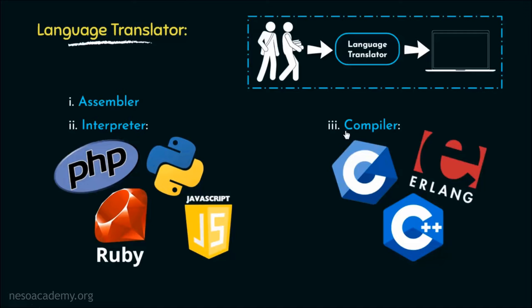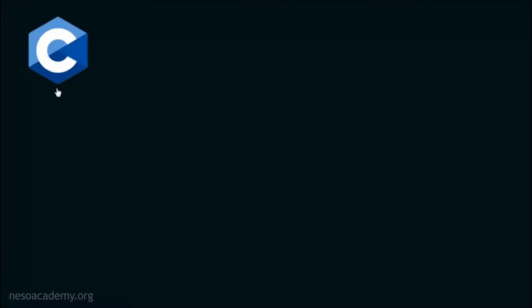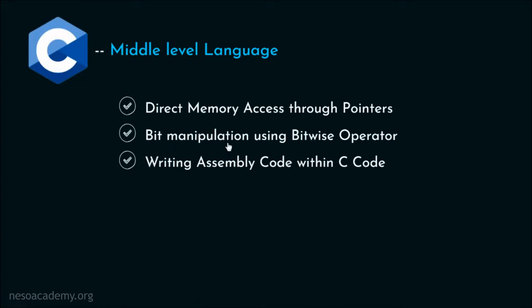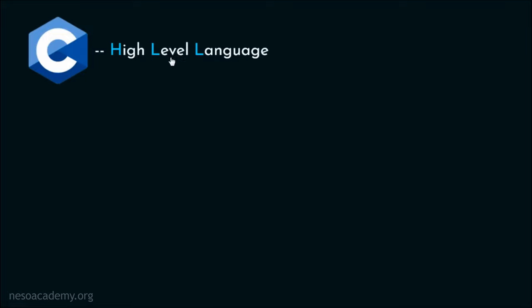Now many of us know about the C programming language. Although nowadays it is classified as a middle-level language because of various features like direct memory access through pointers, bit manipulation using bitwise operators and the ability to embed assembly code within C programs, originally it was classified as a high-level language because syntactically C codes are almost like the English language.